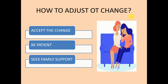Friends make the adjustment process easy, but on a personal level, how can you adjust to change yourself? First, you should accept the change. Second, you should be patient, because adjustment takes time. Third, if you need support, seek your family's support — your parents are always there and will make you feel more at home.